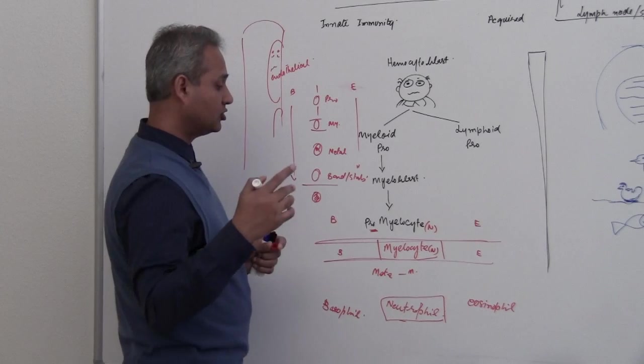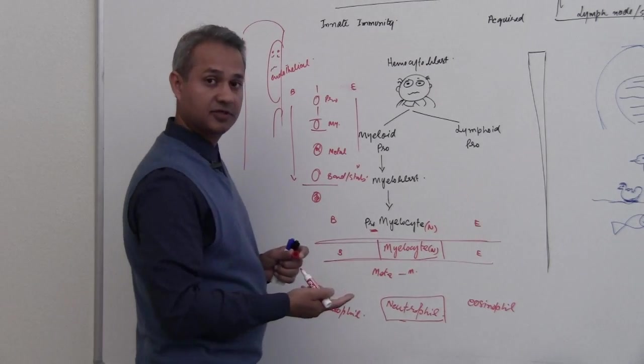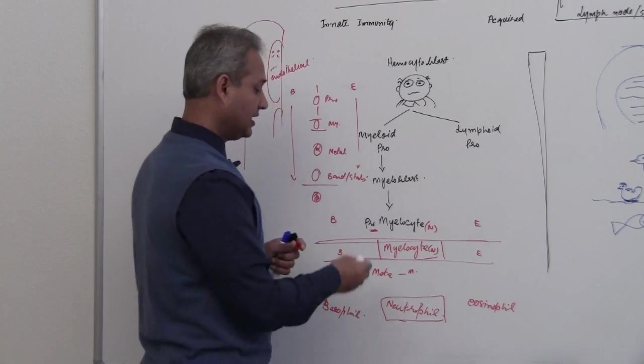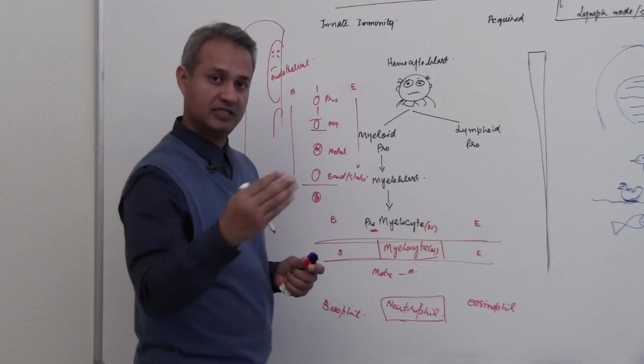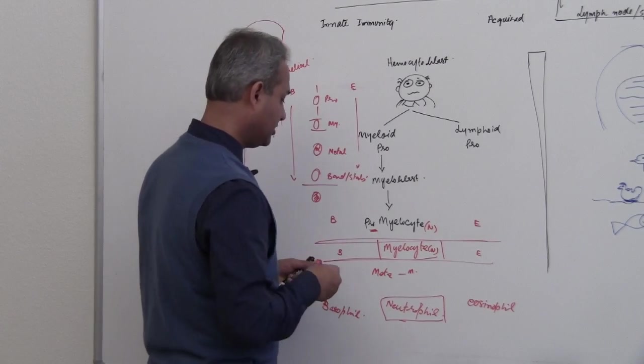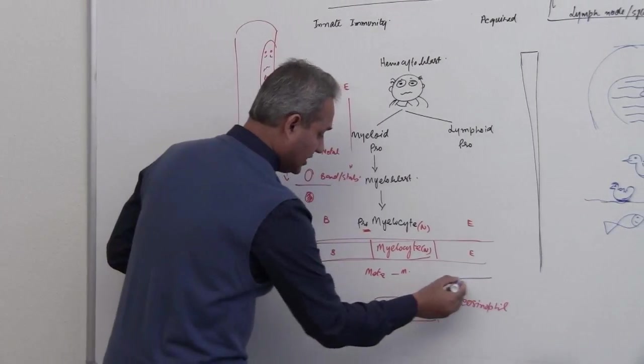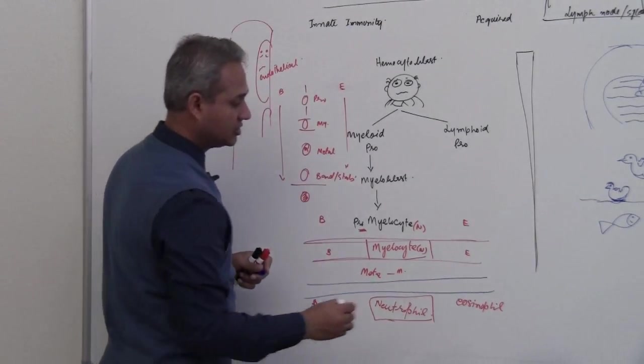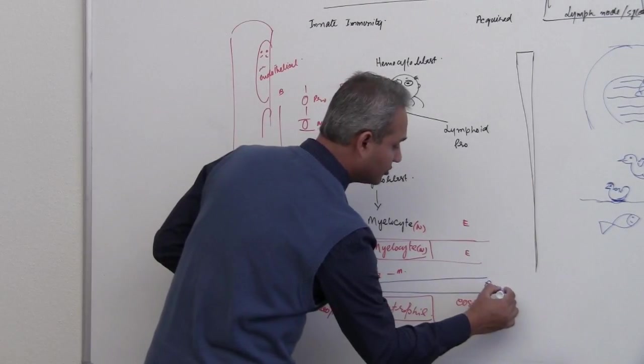So the important stages to remember is the myelocyte stage. Cell before is pro, pro means before. A cell after is meta, meta is after. And then another very interesting stage is the band stage, or stab stage.